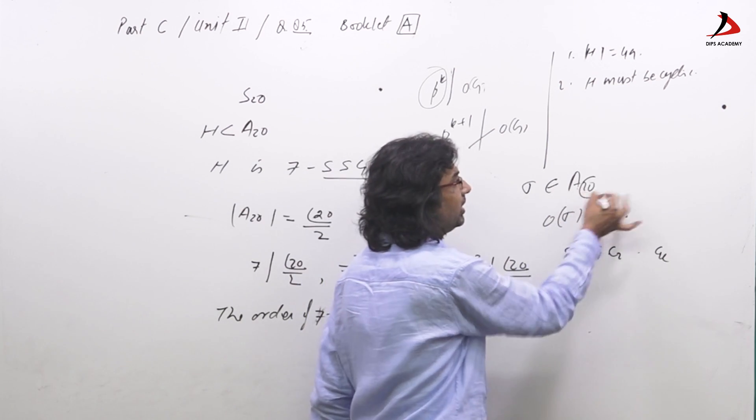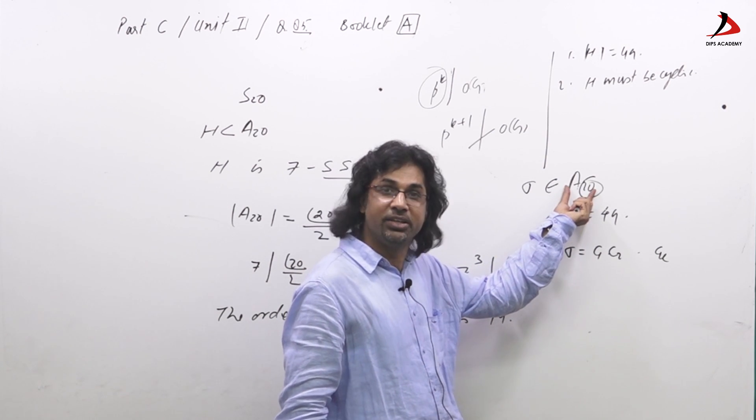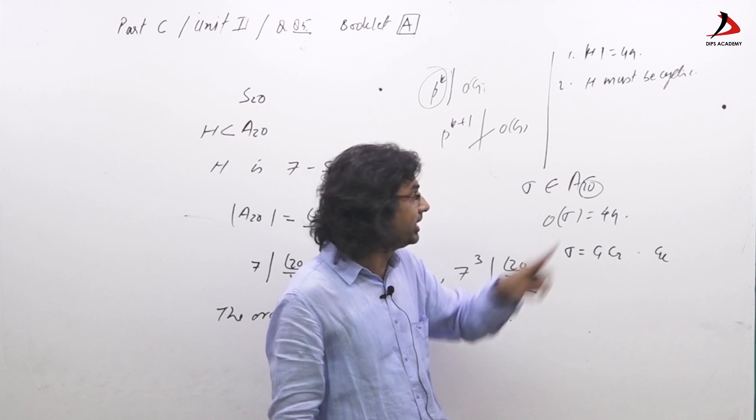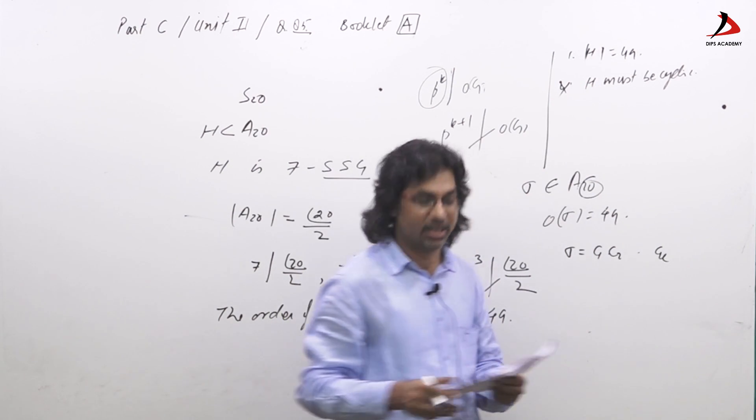Which is not possible - the largest possible length can be 19 in A_20. A 20-cycle, even length, will be odd permutation, so it cannot be in A_20. So it cannot be cyclic. So this option cannot be correct.